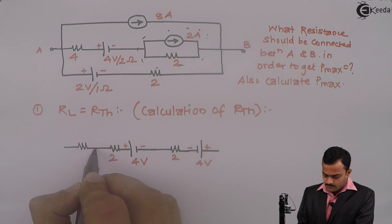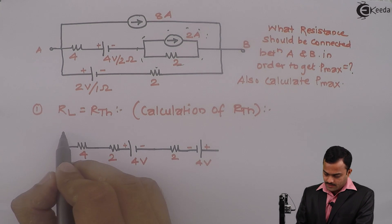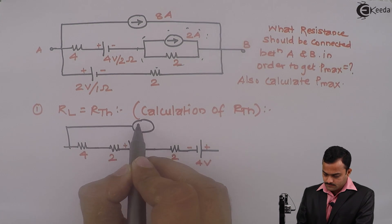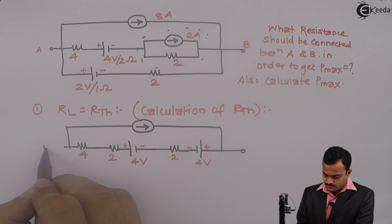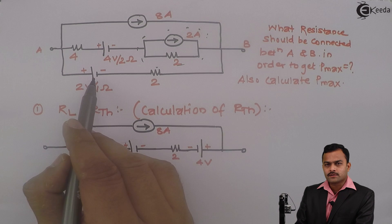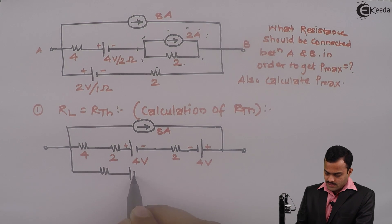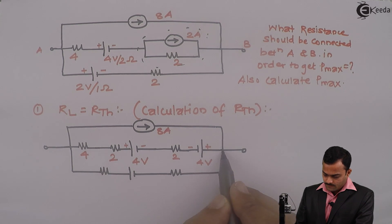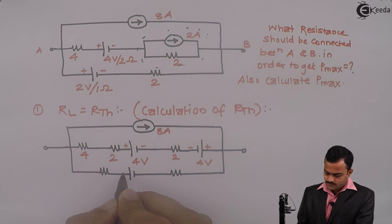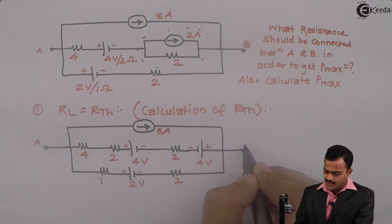So this is 4 ohm as it is, and the 8 ampere current source will remain untouched. This is a voltage source — again this is a practical voltage source. I can draw it as a resistance in series with a voltage: 2 volt with 1 ohm resistance, and this is 2 ohm resistance as it is. These are the terminals A and B.